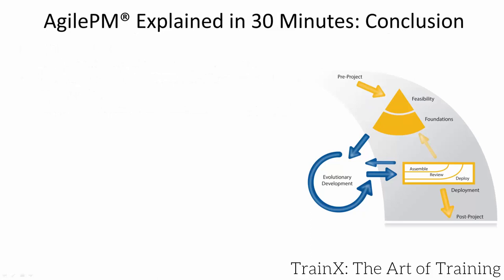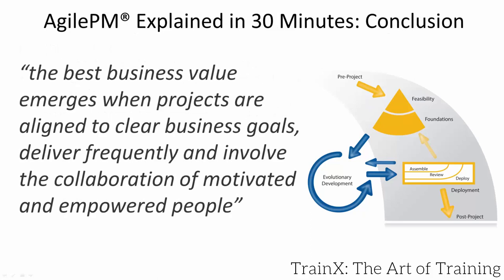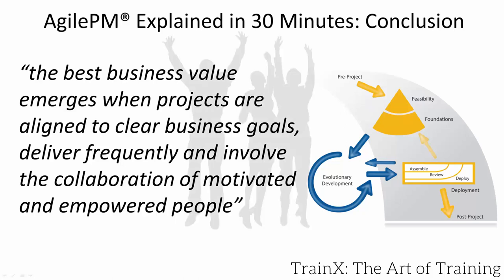So in 30 minutes we've covered the key ideas of Agile PM. We've seen the method used to manage the on-time and on-budget creation of our project's deliverables. Additionally, these have been at the required quality level, allowing us to achieve our organisation's goals.